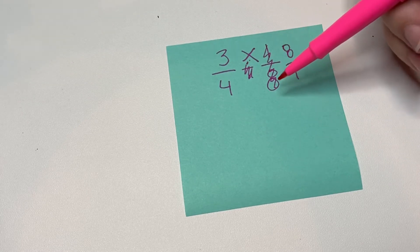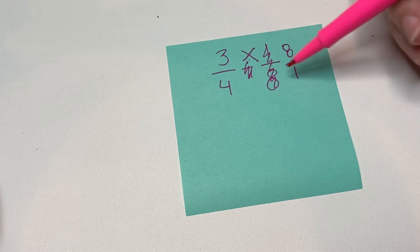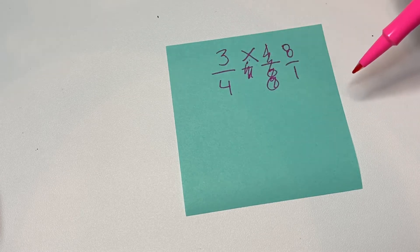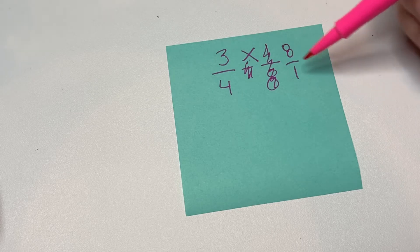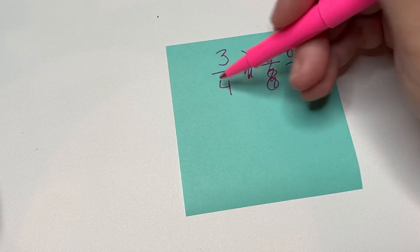Three and one, there's no way for us to cancel there. And then four and eight, four goes into both of them. So four goes into four once and four goes into eight twice.